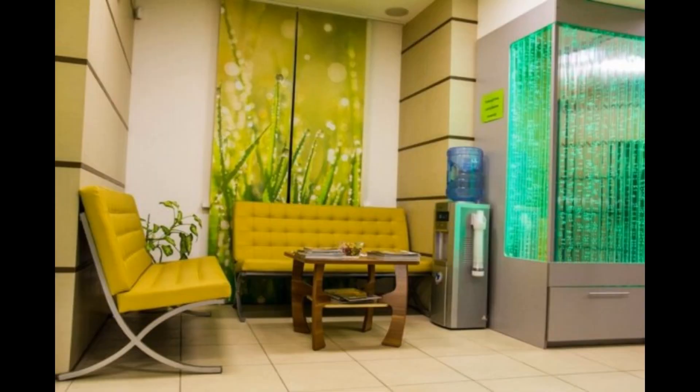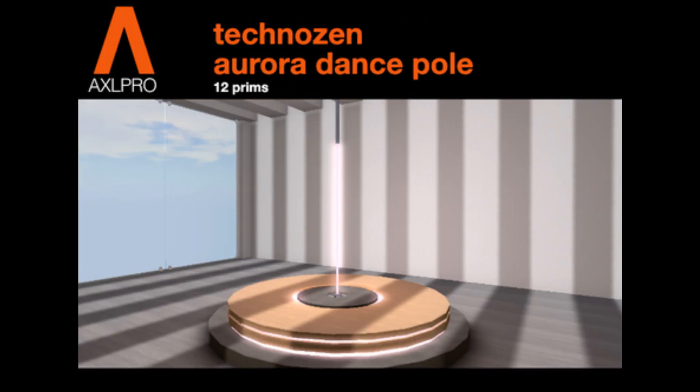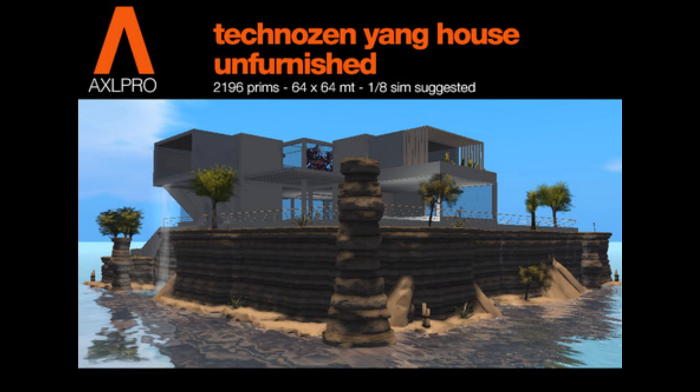Techno Zen is a FUTIGAR ARBO aesthetic subgenre inspired by Japanese design, with a cold, sterile, professional look that is also cozy, friendly, and cute.